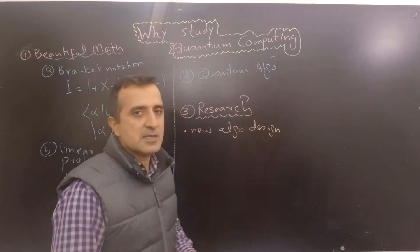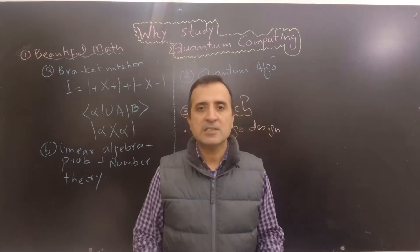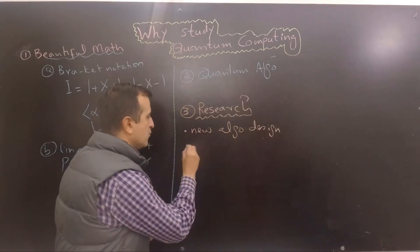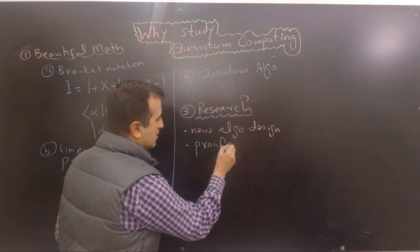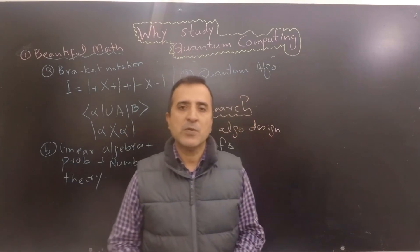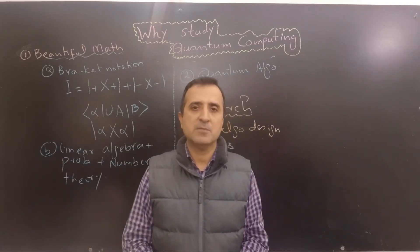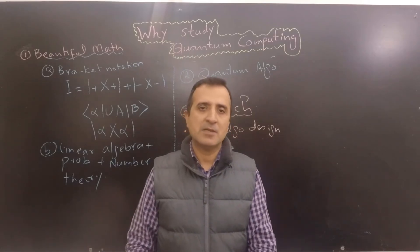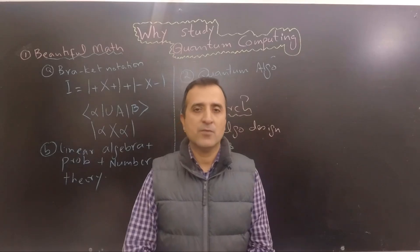There are also many things that still need to be proved in quantum computing. For instance, relationships between quantum and classical computing. So there could be many proofs that you can do. Third aspect can be that in quantum computing we have only two design techniques. One design technique is based upon quantum Fourier transformation and the second design technique is based upon Grover's algorithm. Maybe we can develop new design techniques for quantum algorithms.